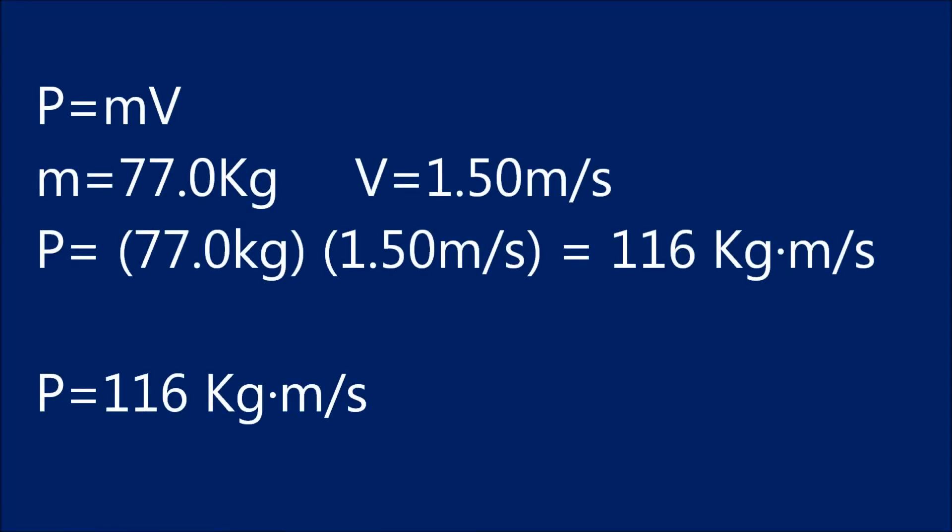By plugging in the numbers I mentioned earlier into the momentum formula, we can solve for my total momentum while I was riding at a velocity of 1.5 meters per second. Upon solving it, we can see that I have a momentum of 116 kilograms times meters per second.